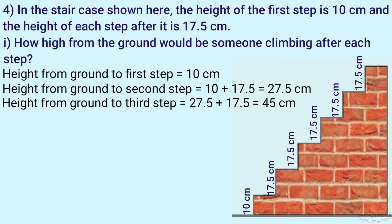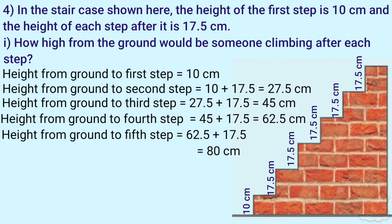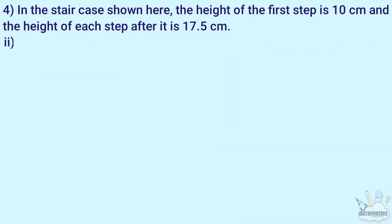At the third step level, height is 27.5 plus 17.5 cm, that is 45 cm. At the fourth step level, height is 45 plus 17.5 cm, that is 62.5 cm. At the fifth step level, height is 62.5 plus 17.5 cm, that is 80 cm. At the sixth step level, height is 80 plus 17.5 cm, that is 97.5 cm.